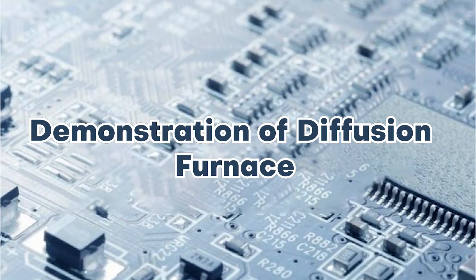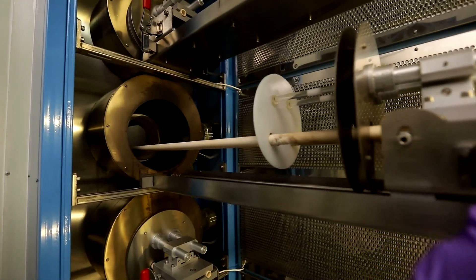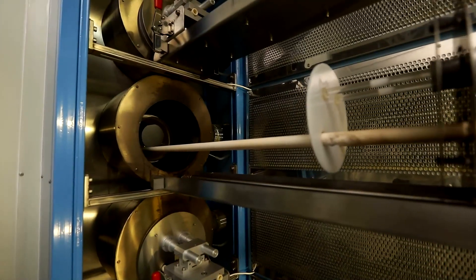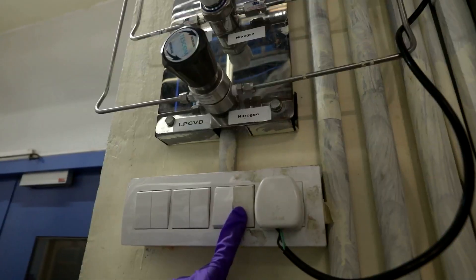Demonstration of the diffusion furnace. This is the furnace in which we are going to diffuse the silicon wafer with phosphorus, that is n-type impurity atoms. Let us first switch on the chiller and exhaust.